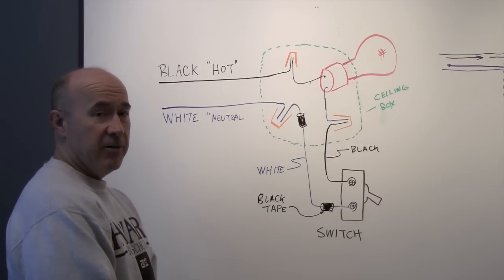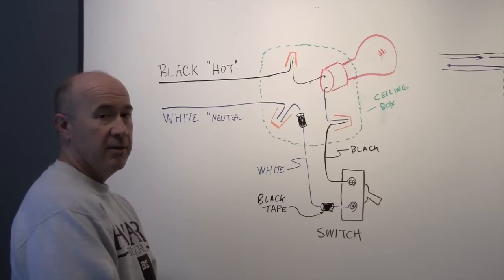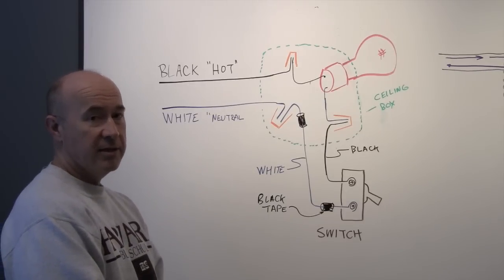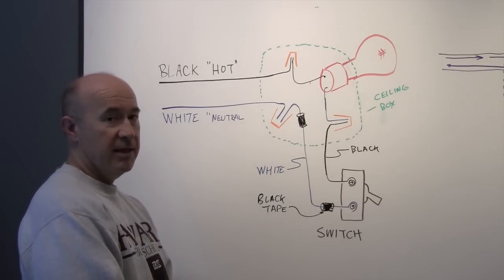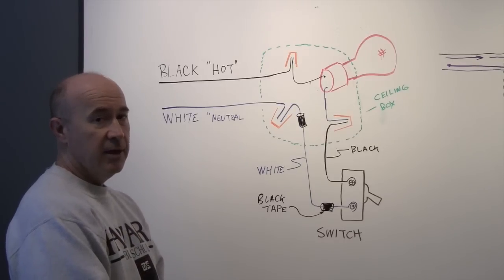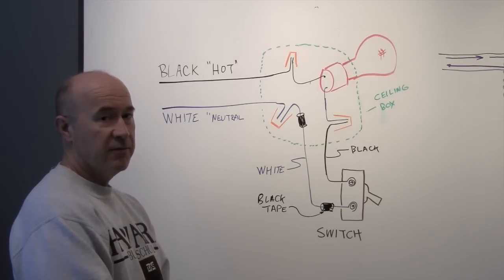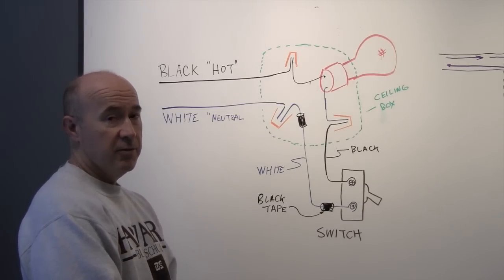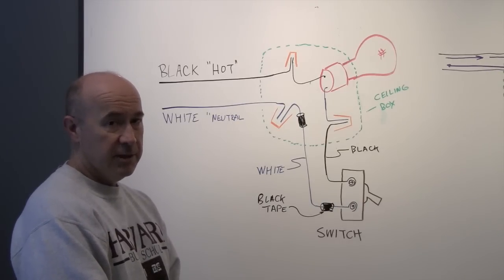So, sometimes the power that's going to a light fixture may run from the breaker box to the switch, then from the switch up to the light. In that case, you don't run into this scenario. There could be another situation where the power from the box first comes into the electrical box where the ceiling fixture is and then there's a run that goes down to the switch.